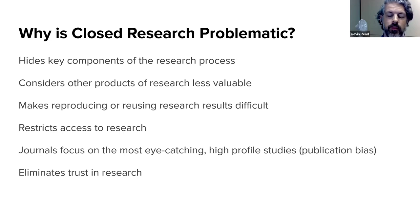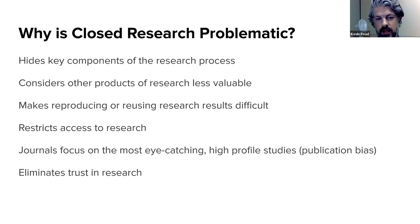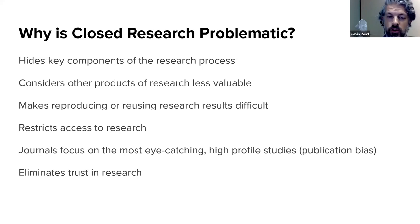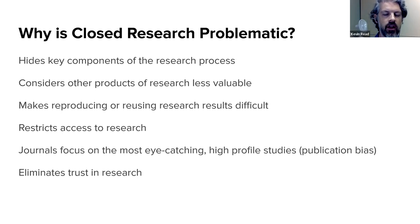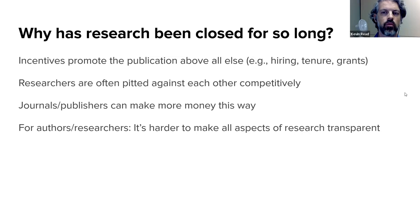Without the underlying data, you can't reuse work for your own research. It restricts access, and because journals only publish the most eye-catching, high-profile studies — known as publication bias — a lot of great research gets rejected simply because journals don't think people will pay to access it. Ultimately, all of this eliminates trust in research, because if we can't access research and know journals are prioritizing specific kinds, it creates distrust more broadly.